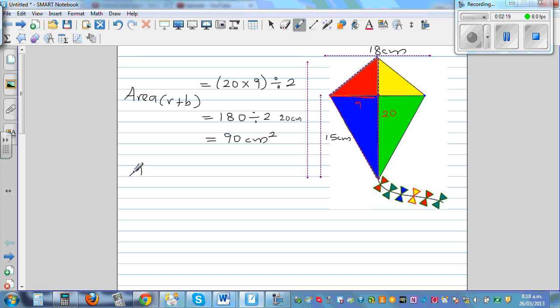Now, use your common sense. What will be the area of this green plus the yellow triangle? That would be the same because you have the same base and same height. So that will also be 90 centimeters squared. The area of the kite would be 90 plus 90, which is 180 centimeters squared.